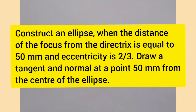In this question, the distance of the focus from the directrix is given, that is 50 mm. Eccentricity is also given, that is 2 by 3. And we have to draw the ellipse using the eccentricity method, and also draw a tangent and normal at a point 50 mm from the center of the ellipse.